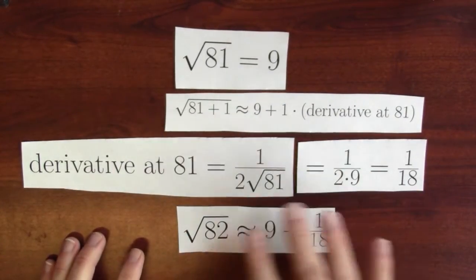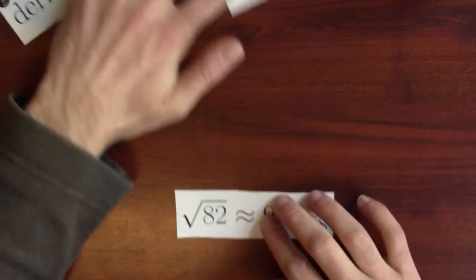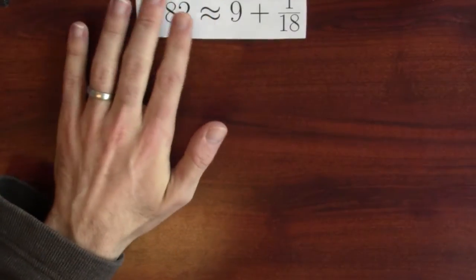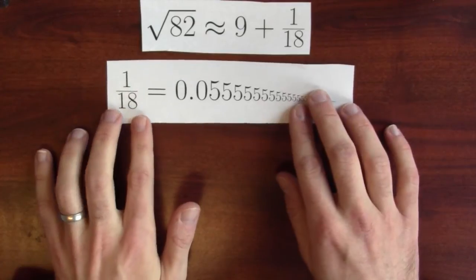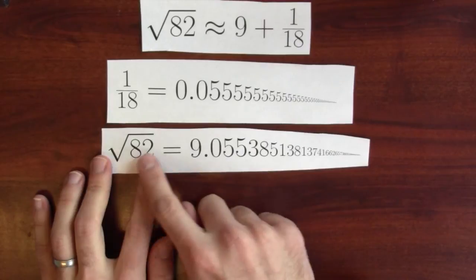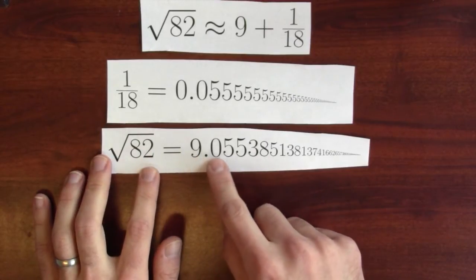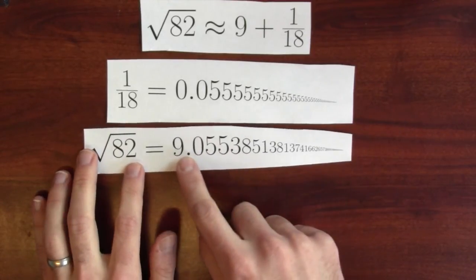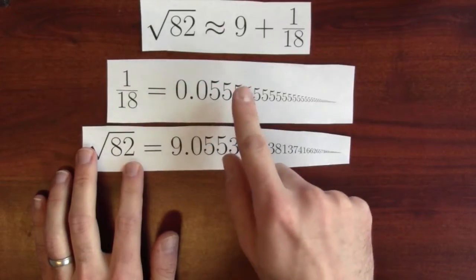And this is pretty good. There's actually two different ways to tell that this isn't such a bad guess. Here's one way to tell. What's 1 18th? Well, it's .05 repeating. And what's the actual value of the square root of 82? It's 9.055. Look, it's pretty close to 9 plus this. So that's pretty good.